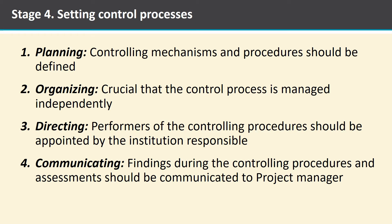Stage four: setting control processes. There are four points. One — planning: controlling mechanisms and procedures should be defined. Two — organising: it is crucial that the control process is managed independently. Three — directing: performers of the controlling procedures should be appointed by the institution responsible. Four — communicating: findings during the controlling procedures and assessments should be communicated to the project manager.